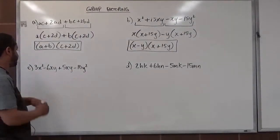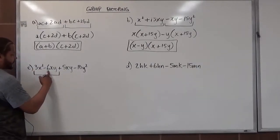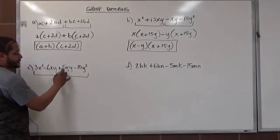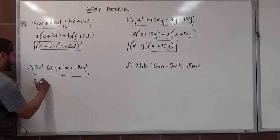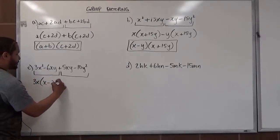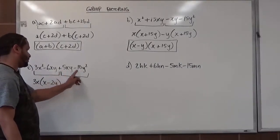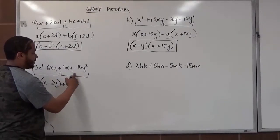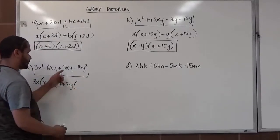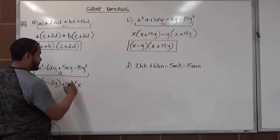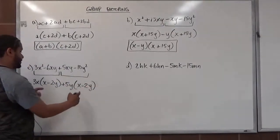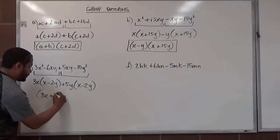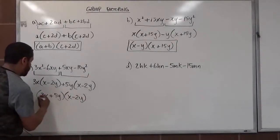Let's look at the next example. The first two terms, 3X² and negative 6XY, have 3X in common. In the second set, 5XY and minus 10Y², have 5Y in common. We factor out 3X from the first set, leaving X minus 2Y. For the second set, since the third term is positive, we factor out positive 5Y — what's left over is X minus 2Y as well. We again see the common factor X minus 2Y, and the leading terms 3X plus 5Y go in their own set of parentheses. So we have (3X + 5Y)(X − 2Y), and we're done with this set of group factoring.